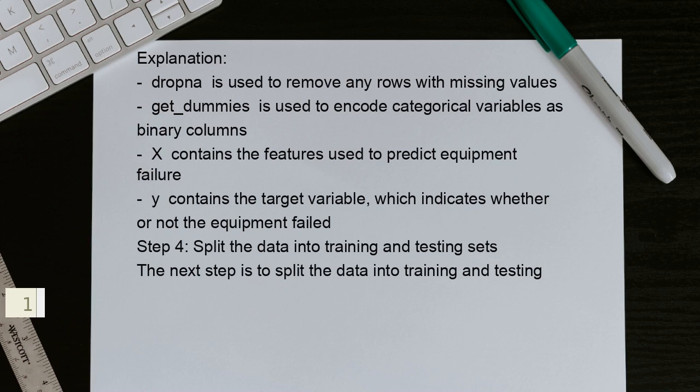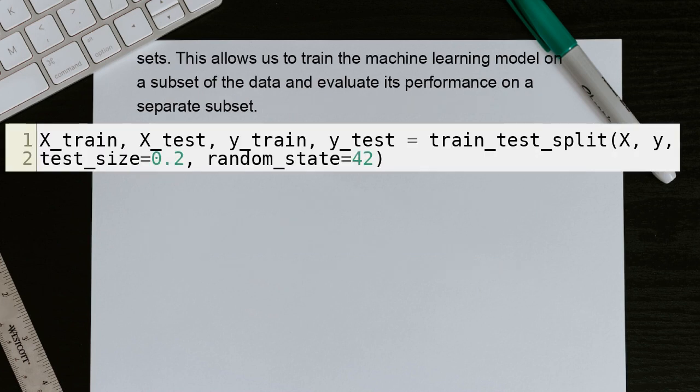Step 4: Split the data into training and testing sets. The next step is to split the data into training and testing sets. This allows us to train the machine learning model on a subset of the data and evaluate its performance on a separate subset.